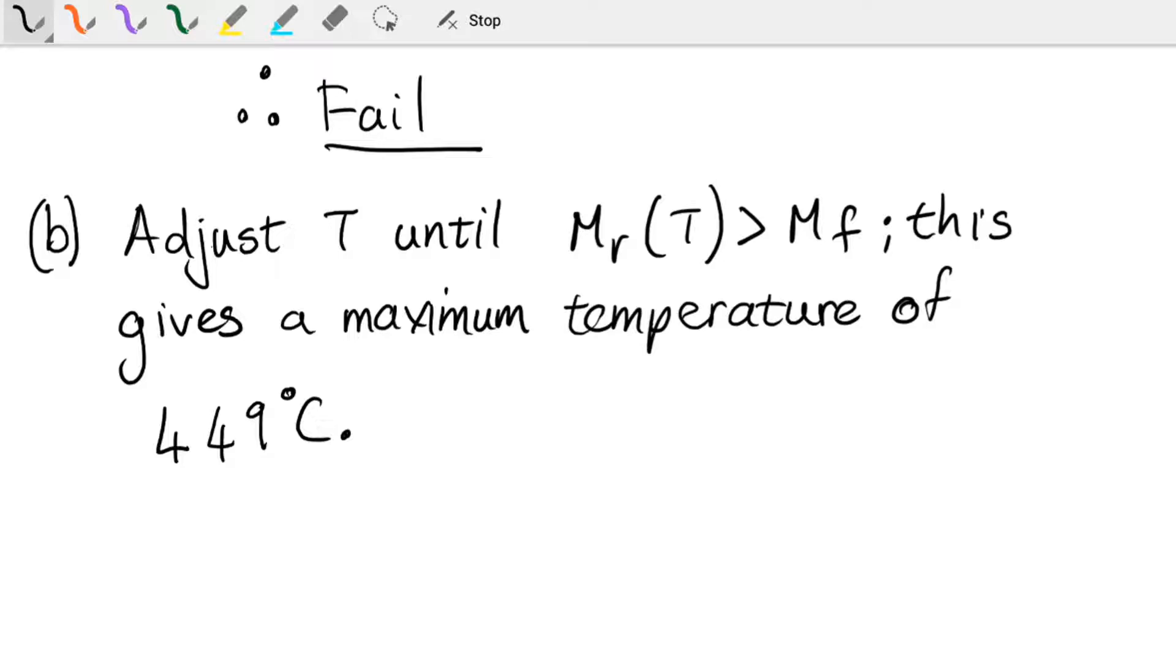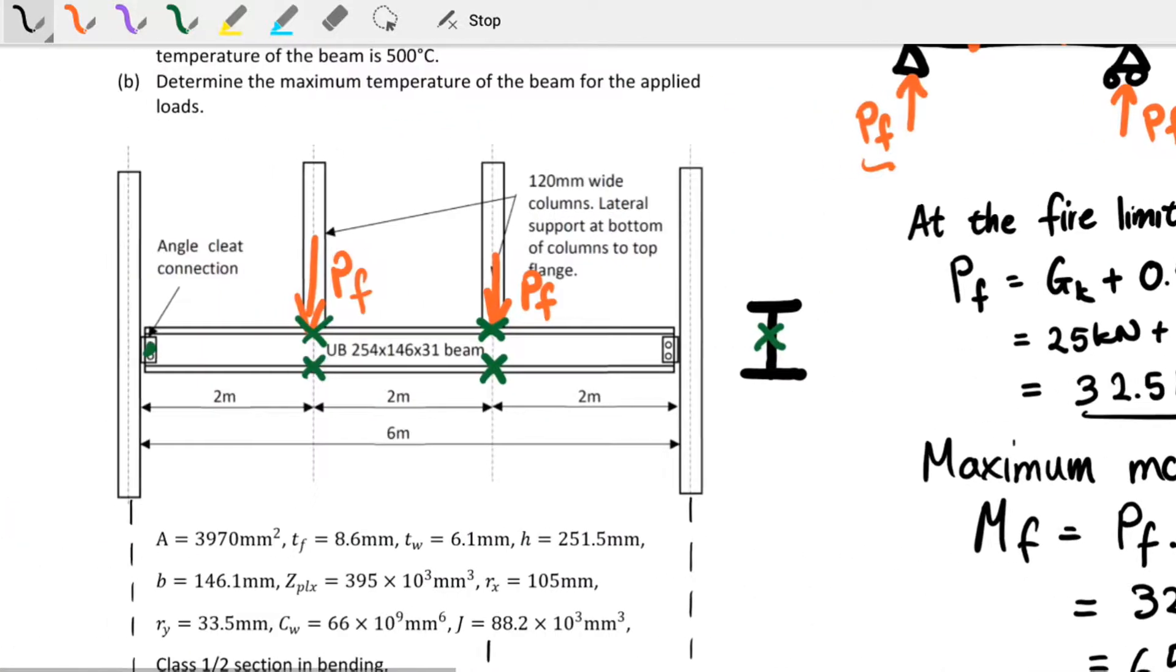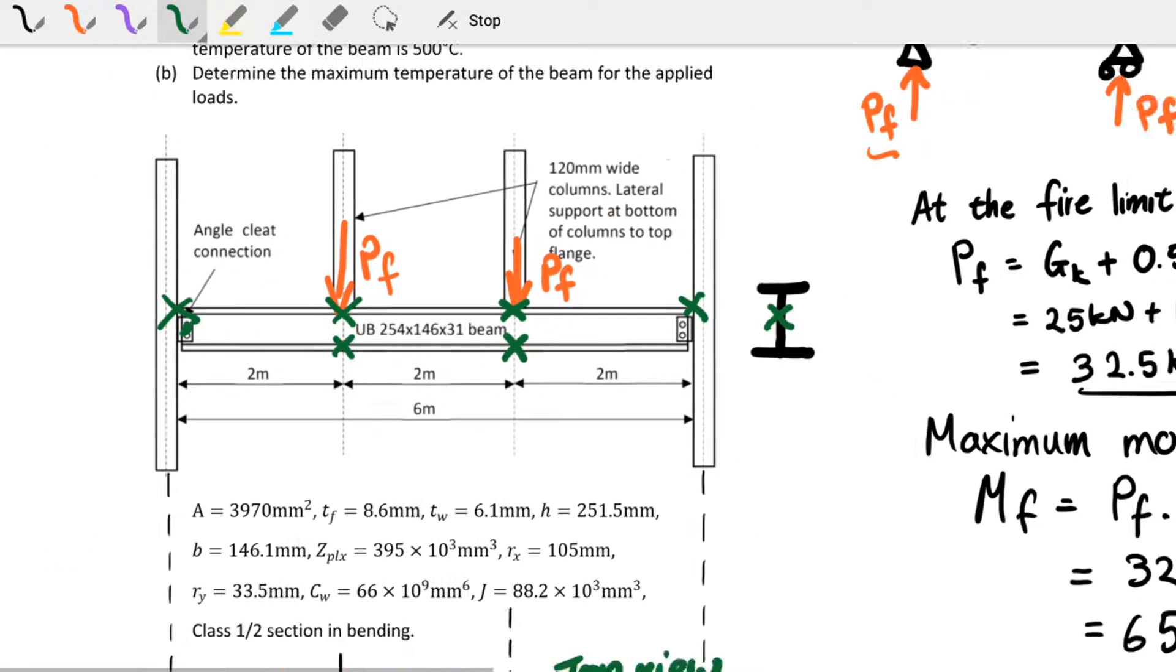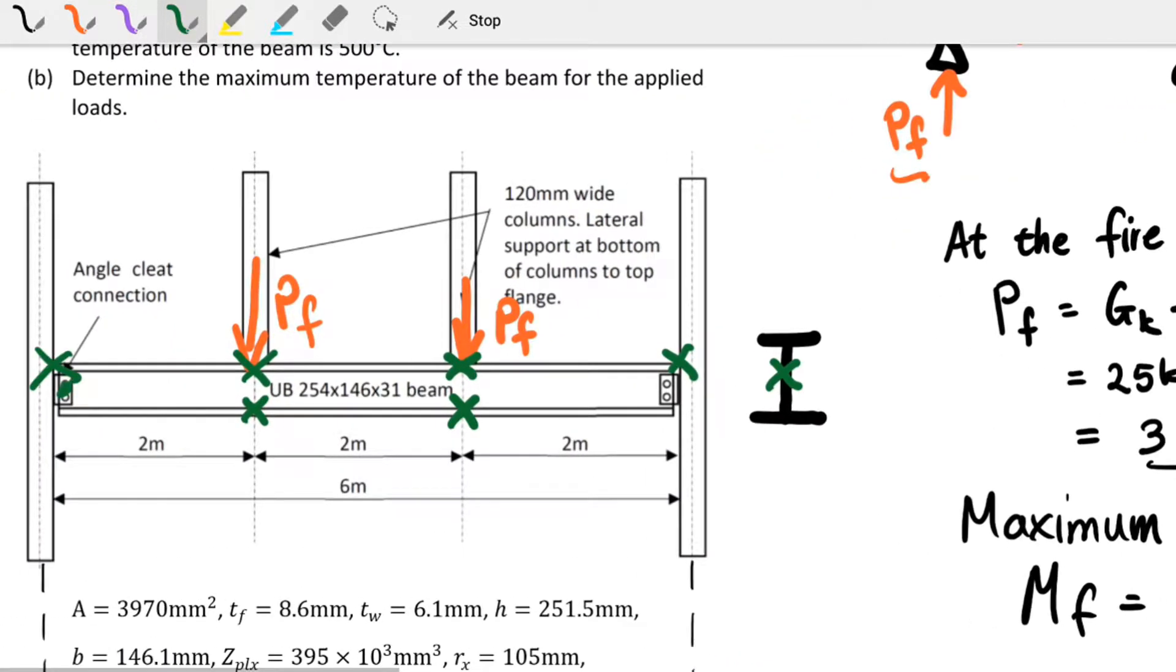So that takes us through this next worked example. To go back to our start, where our beam was, we had a cross section, we had a beam spanning six meters but it was two meters between points of lateral support, and so we got our bending moment diagram of about 65 kilonewton meters at the fire limit state. Then we calculated the resistance of this beam, found it to be insufficient, and then saw that if we dropped the temperature to 449 in some way or another it would work. Otherwise we would need a bigger beam for this to work out. Thank you very much.